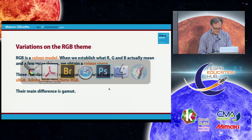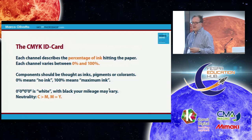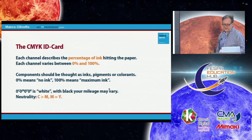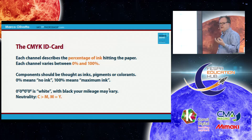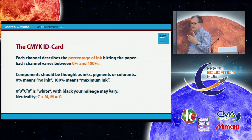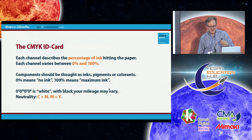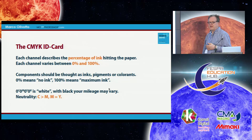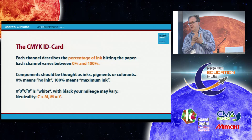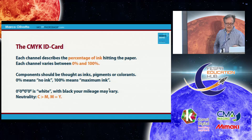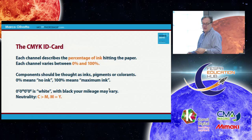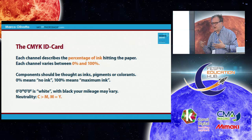Turning to CMYK: the numbers describe the percentage of ink that hits the paper, varying between 0 and 100%. It's about the dot size in the screen. The components should be thought of as inks, pigments, or colorants. Zero percent means no ink, so what we see is the white of the paper — called paper white. One hundred percent is maximum ink. Zero in all components is white, and the black formula depends on several factors.